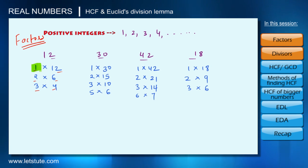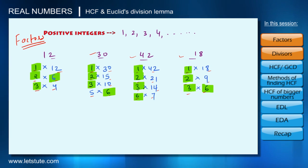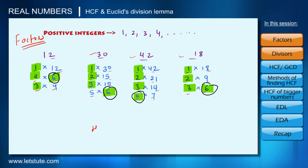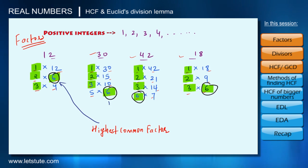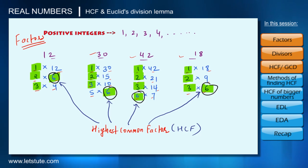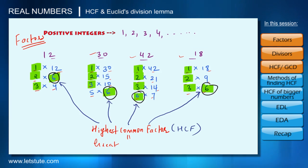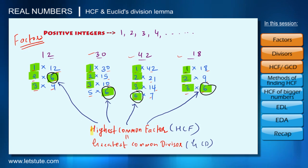Now, talking about the common thing: 1, 2, 3, and 6 are the common factors of all the numbers 12, 30, 42, and 18. Out of these common factors, 6 is the highest number which is a factor of all of them, so 6 is called the Highest Common Factor, or HCF, of 12, 30, 42, and 18. Since 6 is also the greatest number that divides all of them, HCF is also called the Greatest Common Divisor.